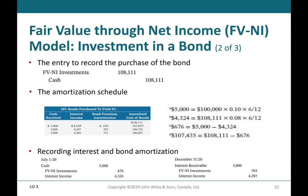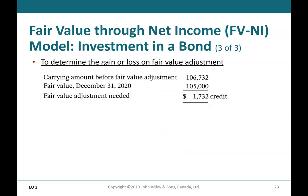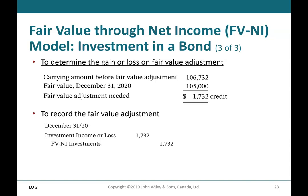On December 31, 2020: debit interest receivable $5,000; credit fair value through NI investments $703; credit investment income $4,297. To determine the gain or loss on fair value adjustment: carrying amount before fair value adjustment is $106,732; fair value as at December 31, 2020 is $105,000; fair value adjustment needed is $1,732 credit. To record the fair value adjustment at December 31, 2020: debit investment income or loss $1,732; credit fair value through NI investments $1,732.